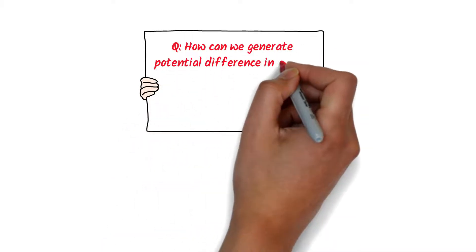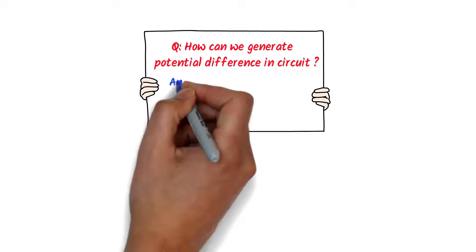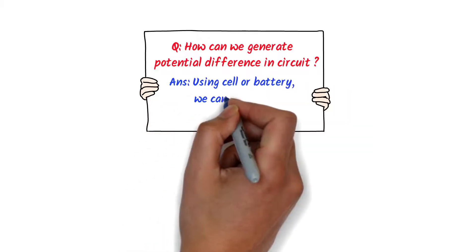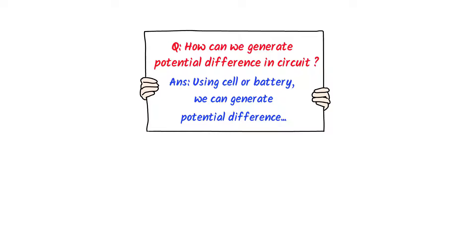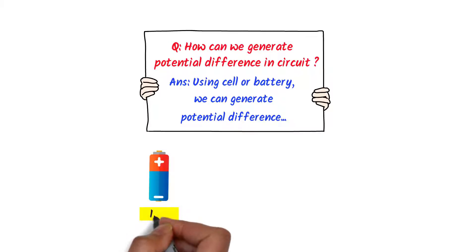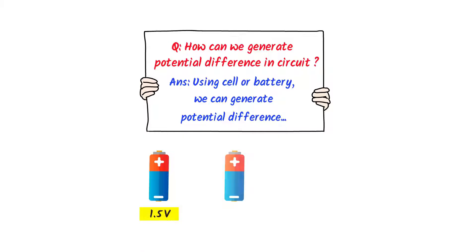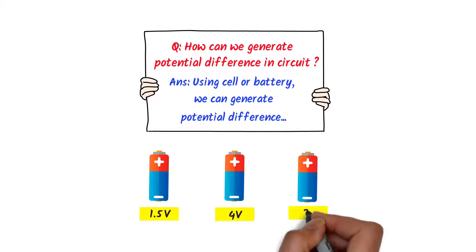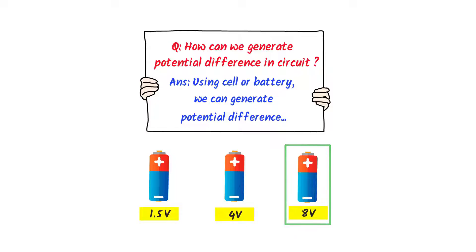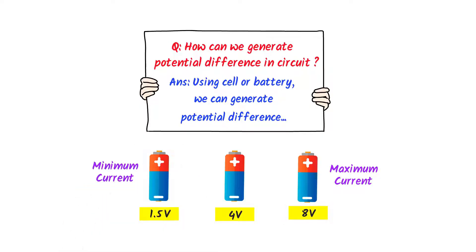How can we generate potential difference in an electric circuit? Using a cell or battery, we can easily generate potential difference. For example, this battery can generate 1.5V potential difference, this battery can generate 4V, and this battery can generate 8V. Also remember that the 8V battery can produce maximum current because it has maximum potential difference, while the 1.5V battery can produce minimum current because it has minimum potential difference.